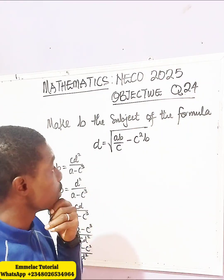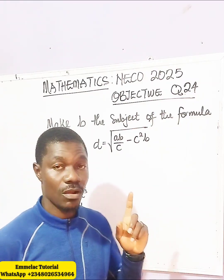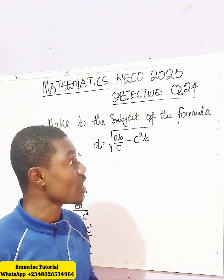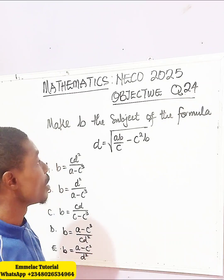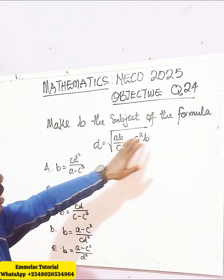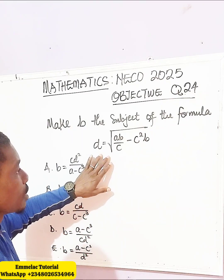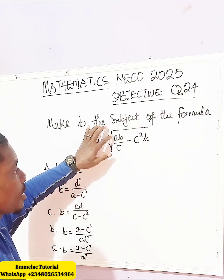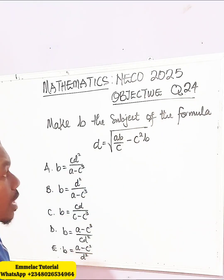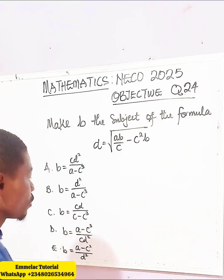Welcome to a Minakonline tutorial. Before us is objective question 24 of NECO 2025. It says make B the subject of the formula, and we're given that D equals the square root of AB all over C minus C squared B.